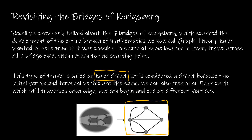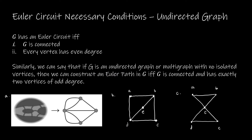An Euler circuit is considered a circuit because we start at one point and end at that same point. We can visit the nodes or vertices as many times as we want to, but what we want to do is travel each edge only one time. Your textbook goes through several pages talking about the necessary and sufficient conditions for there to be an Euler circuit or an Euler path.